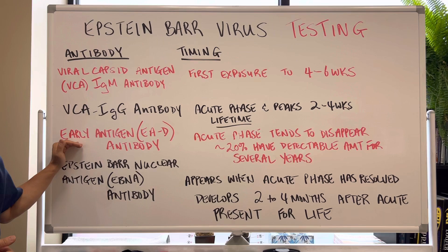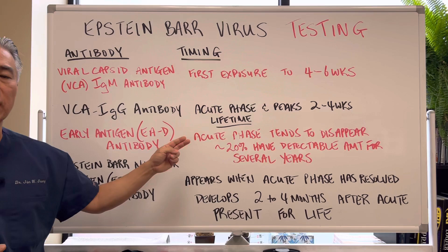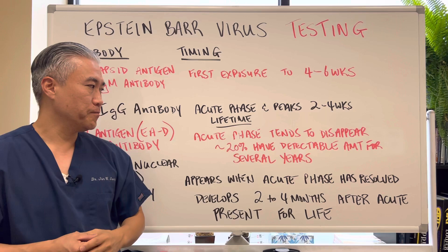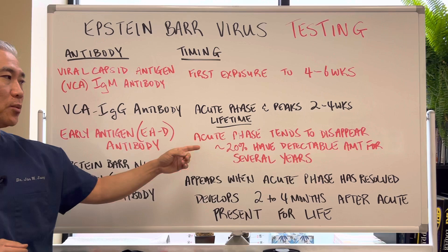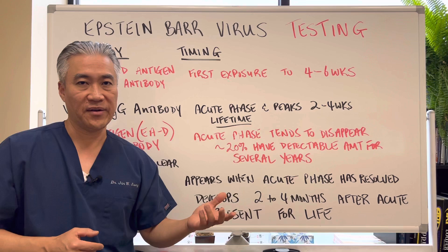There's something called early antigen EAD antibody, and this shows up in the acute phases of Epstein-Barr and tends to disappear. However, in about 20% of the population, this antibody will persist and will be detectable for several years, or for some people, a lifetime.